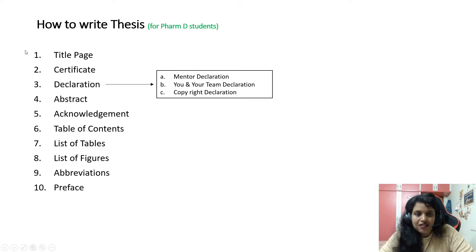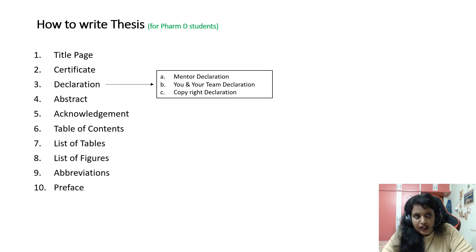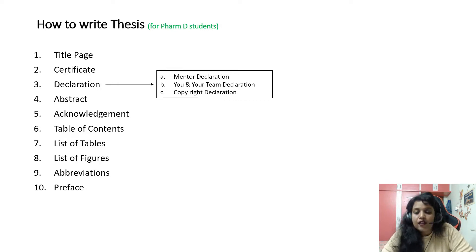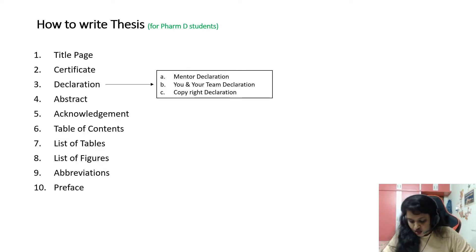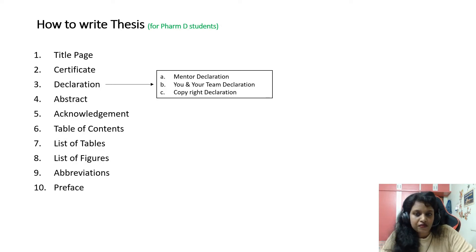The sixth part is the table of contents, which includes all the top headings of your thesis. Then there is the list of tables with their names and table numbers, the list of figures with their names, page numbers, and serial numbers, an abbreviations table listing all short forms used and their full forms, and finally the preface — an introduction to the book explaining what it is about and why it was written.